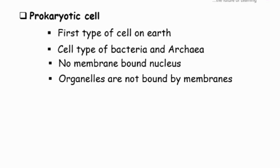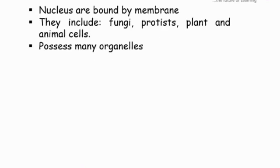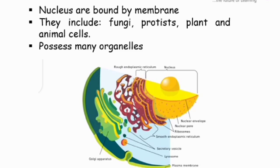The next slide is eukaryotic cell, another type of cell. In eukaryotic cell, the nucleus are bound by membrane. Eukaryotic cells include fungi, protists, plant and animal cells. They possess many organelles. This is a diagram of an eukaryotic cell.